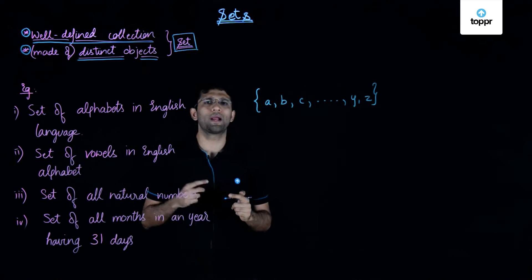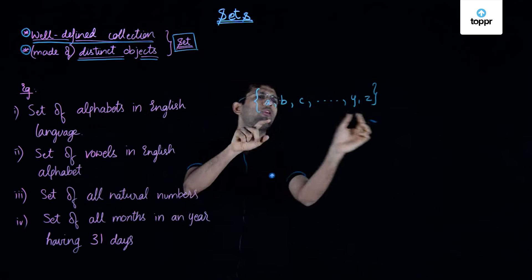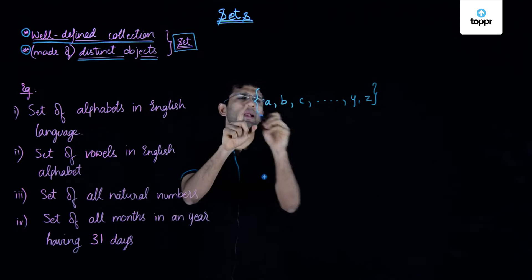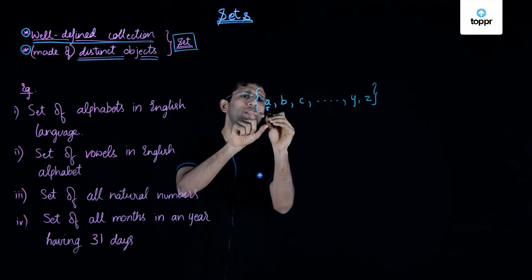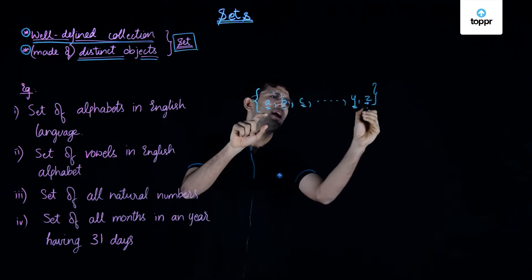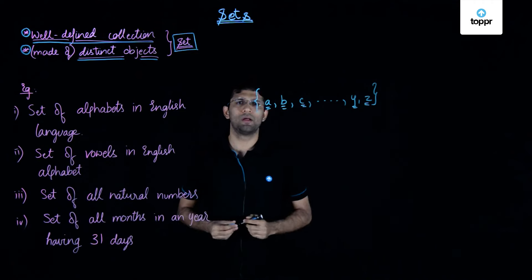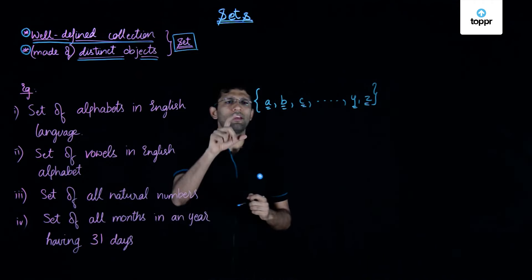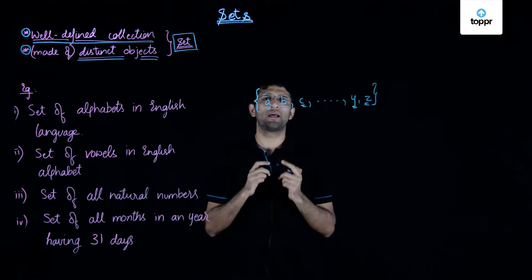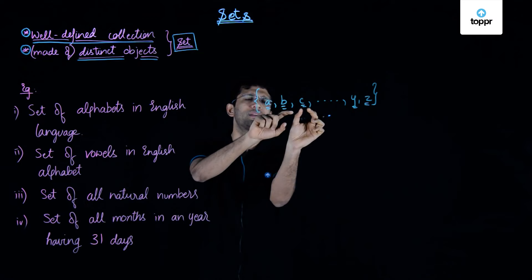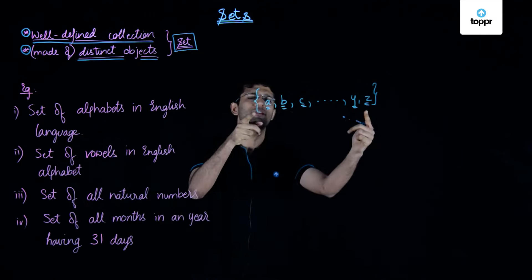Whenever we want to write or represent a set in a tabular form like this, we write brace brackets around the elements of the set. Inside those brace brackets, all the elements are included and separated by commas. A thing to note here is that if any element is repeated in a set, it is written only once. In other words, repetition of elements in a set does not count — there is only one existence of every element in a given set.